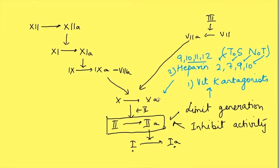Factor 10 direct inhibitors are also available. Direct thrombin inhibitors like dabigatran inhibit the activity of thrombin.